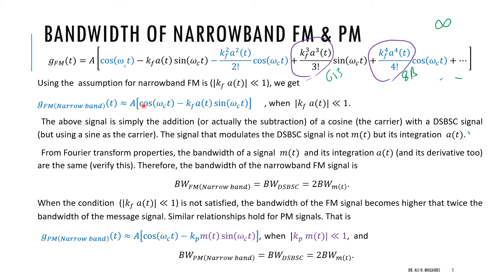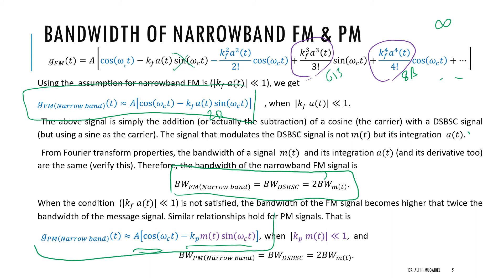Now we can determine the bandwidth. The first term is the carrier, and the second term has bandwidth 2B. So a narrowband FM signal has a bandwidth equal to 2B — twice the bandwidth of the message. This is like double sideband suppressed carrier (DSB-SC): we cannot go below AM. Just as dropping the message term loses the signal in AM, dropping the second term in FM loses the message.